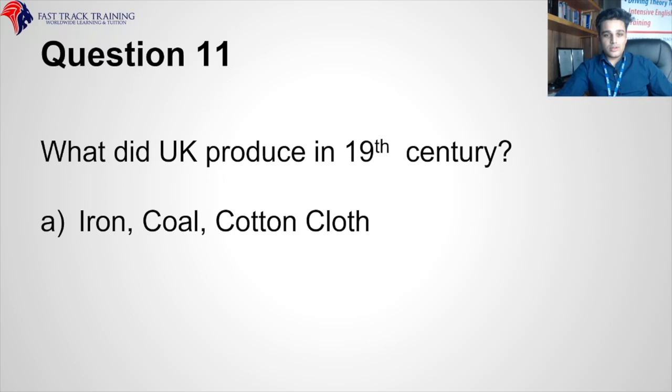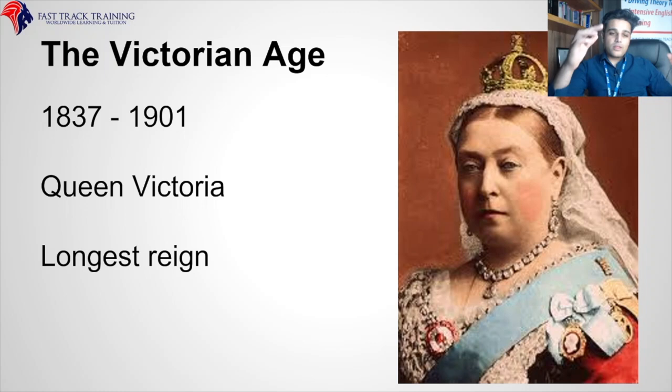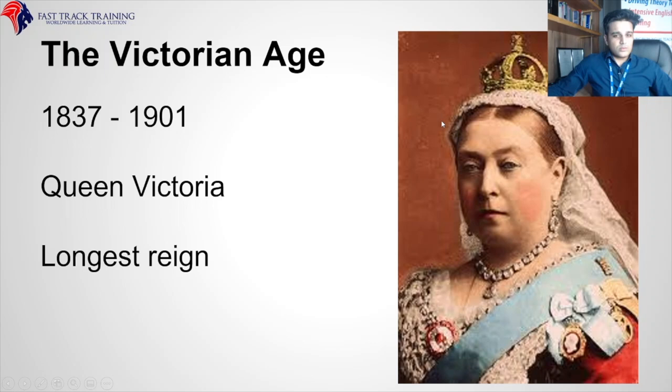Now we're going to talk about the Victorian age. This picture on the right is of Queen Victoria — very sad at this point because her husband had died and she was in mourning for 40 years. She was the longest reigning queen until Queen Elizabeth II came along. Victoria reigned from 1837 to 1901.